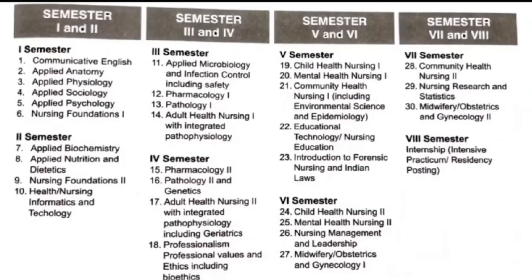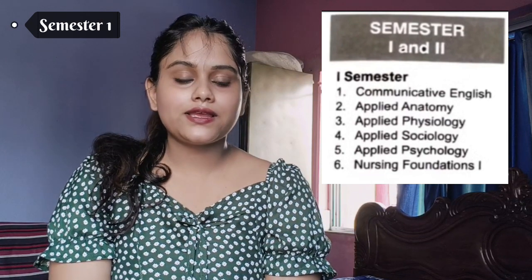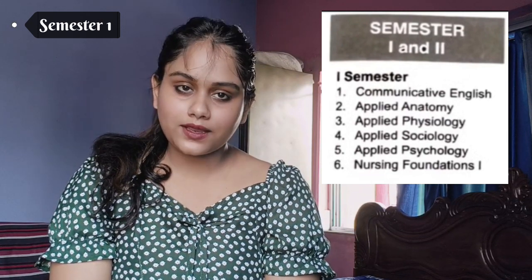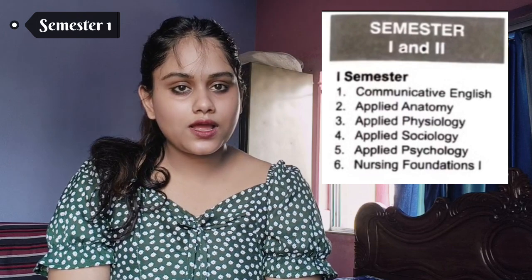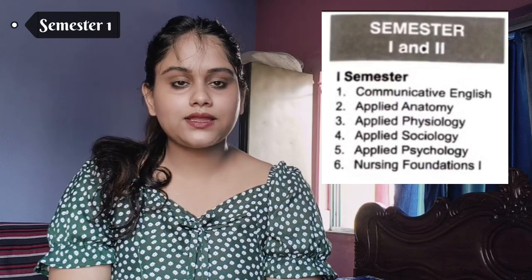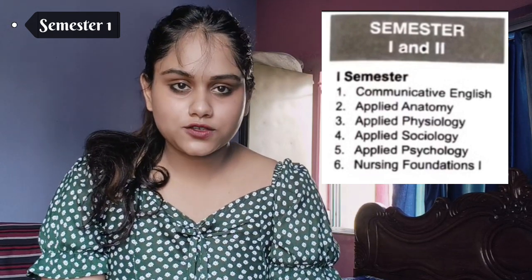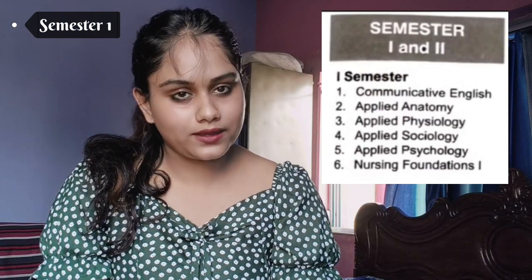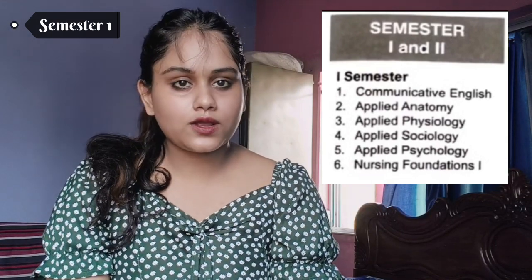So here are the total eight semesters' subjects. Focusing on Semester 1: you have to give 4 papers. First is Communicative English, then Applied Anatomy and Applied Physiology — these two come as one paper, then Applied Sociology and Applied Psychology — these two also come as one paper, and then Nursing Foundation 1. So total 4 papers in Semester 1.